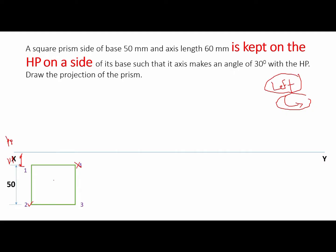Then we'll find the midpoint of this square by drawing the diagonals — simply connect the diagonals and we get the center point. From this midpoint the axis will pass. Then project line 1-2 in the upward direction using faint construction lines. The point which intersects with the XY line is named 1 dash, 2 dash. Similarly, project the axis point and edge 4-3 also in the vertical direction.